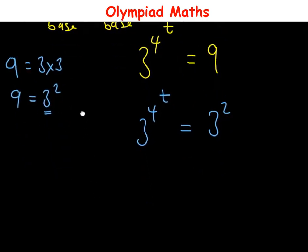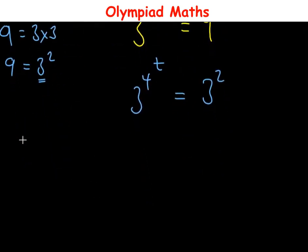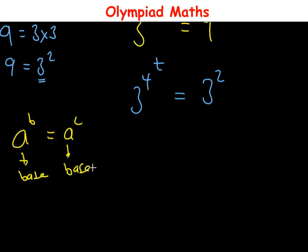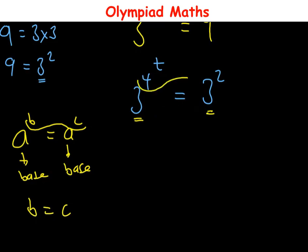Applying the rule of indices — if you have a raised to power b equals a raised to power c, since we have the same base, we can compare the exponents b equals c. We have the same base, 3, so we compare the exponents, giving us 4 raised to power t is equal to 2.